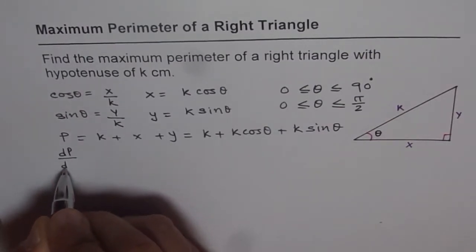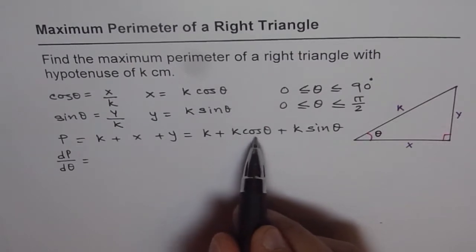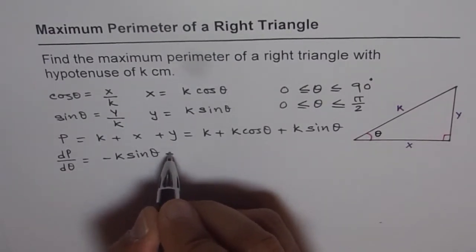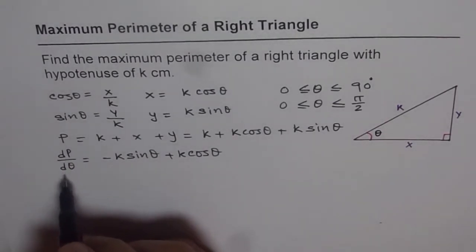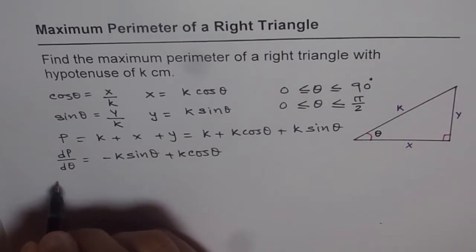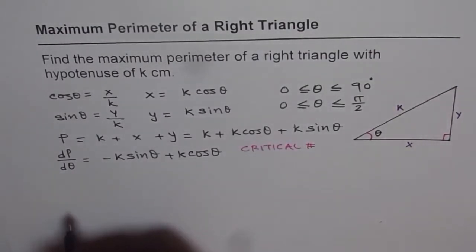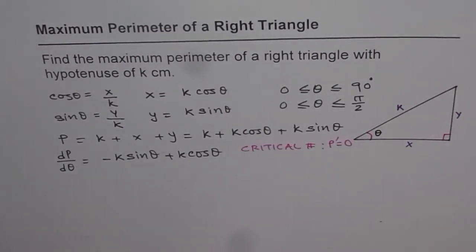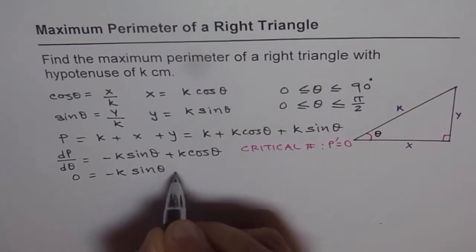We can find the derivative of this perimeter with respect to theta. So dP/dθ equals: the derivative of k is 0, the derivative of k·cos θ is −k·sin θ, and the derivative of k·sin θ is k·cos θ. So we get dP/dθ = −k·sin θ + k·cos θ.